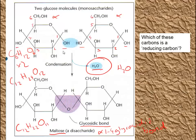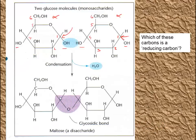Which carbons in maltose are reducing carbons? In the original alpha glucoses, the carbon attached to an O and an OH was the reducing carbon. In maltose, the carbon used to form the glycosidic bond is no longer a reducing carbon — it's no longer attached to both an O and an OH. But the other end still has a free reducing carbon. So maltose will act as a reducing sugar and give a positive test with Benedict's solution.